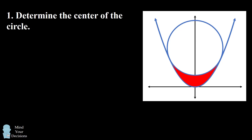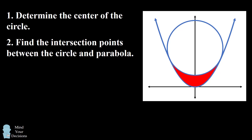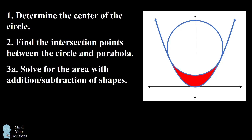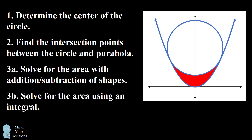I'll proceed to find the answer in a series of three steps. We'll first determine the center of the circle. Then we'll find the intersection points between the circle and the parabola. We'll then calculate the area in two different ways — first using addition and subtraction of simple shapes, and then also using an integral.